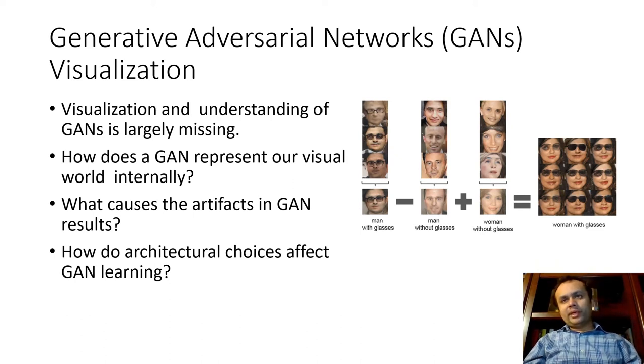So we can ask questions like, how does a GAN represent our visual world internally? And when we observe certain artifacts in the GAN, then why are we and how are they being generated? And then how do certain architectural choices affect GAN learning? That said, there has been some progress in this area in the last year or so especially.